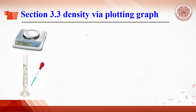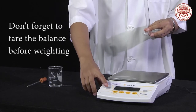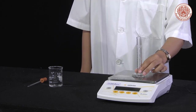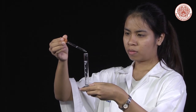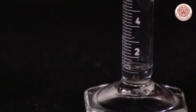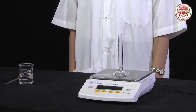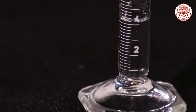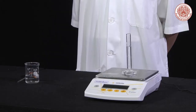An alternative method to determine the density of water is graph plotting. The density obtained from the slope of the graph is supposed to be more accurate. Weigh a dry, clean 10 mL graduated cylinder, add 1 mL of water and adjust to get exactly 1 mL, then weigh. Repeat by adding water to 4 mL and 10 mL and then weigh. The average density will be obtained.